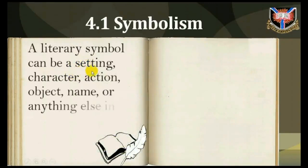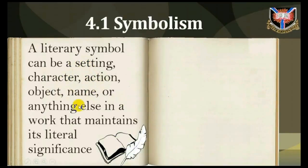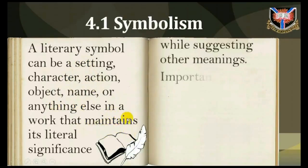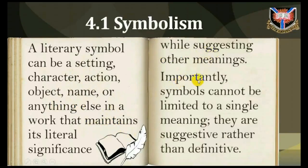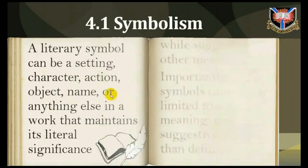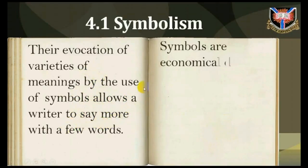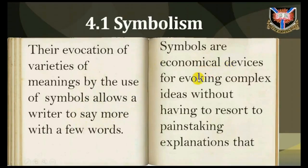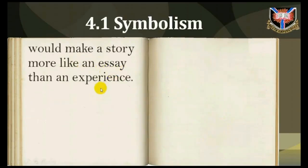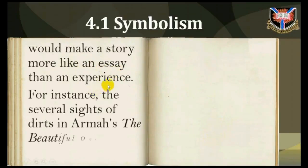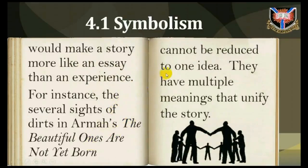A literary symbol can be a certain character, action, object, name, or anything in a work that maintains its literal significance while suggesting other meanings. Importantly, symbols cannot be limited to a single meaning. They are suggestive rather than definitive. Their evocation of varieties of meanings allows the writer to say more with fewer words. Symbols are economical devices for evoking complex ideas without resorting to lengthy explanations that would make a story more like an essay than an experience. For instance, the several symbols of death in 'The Beautyful Ones Are Not Yet Born' cannot be reduced to one idea — they have multiple meanings that unify the story.